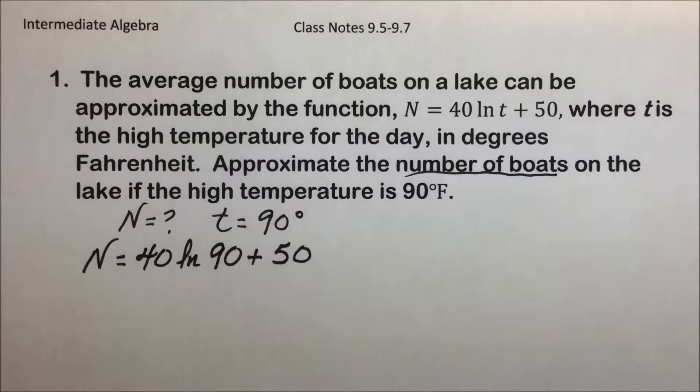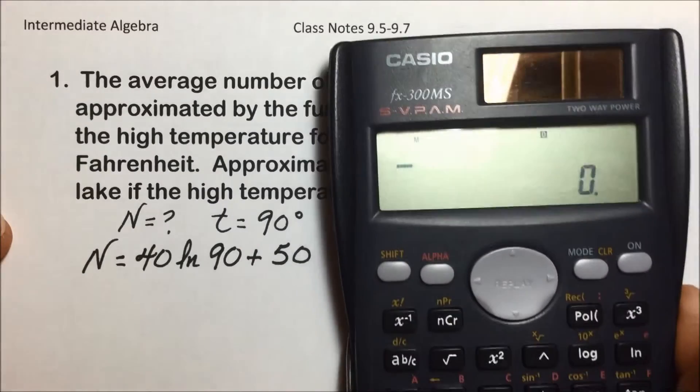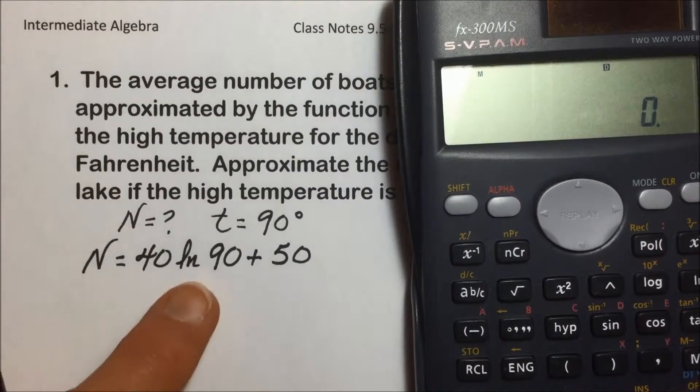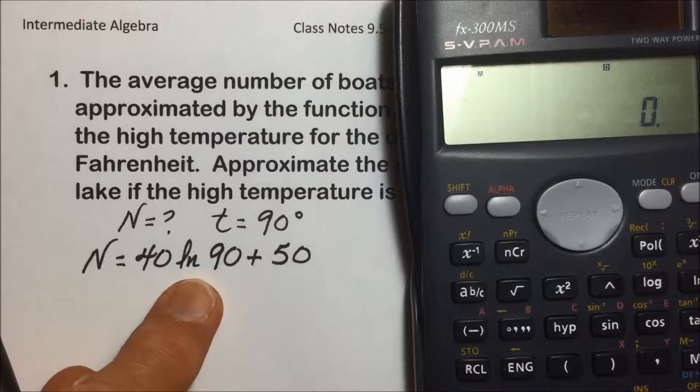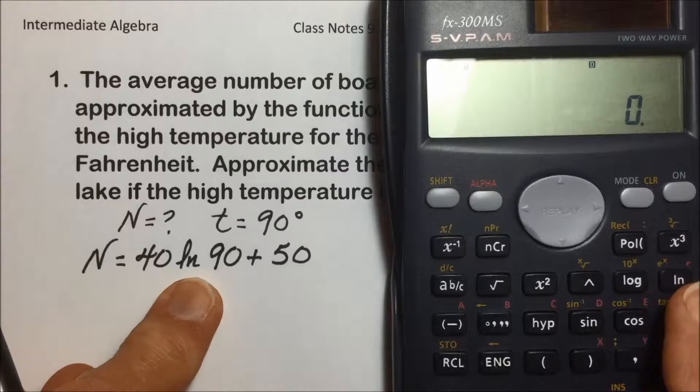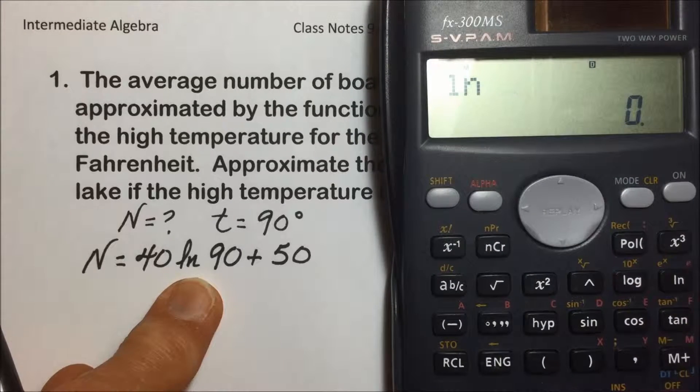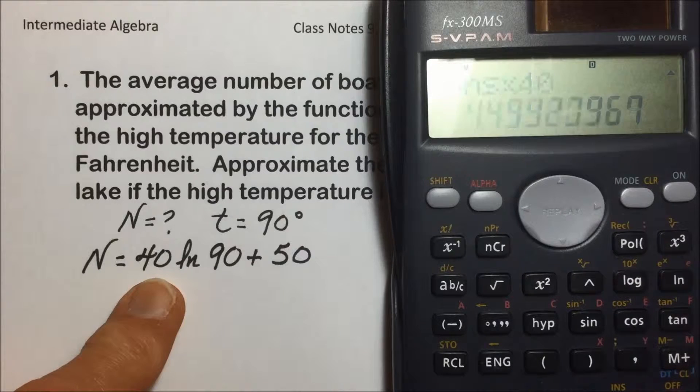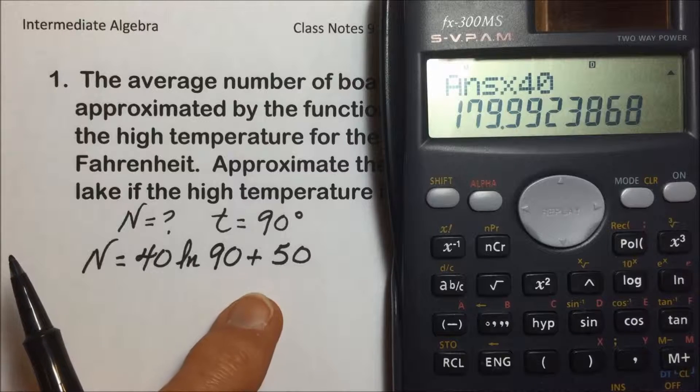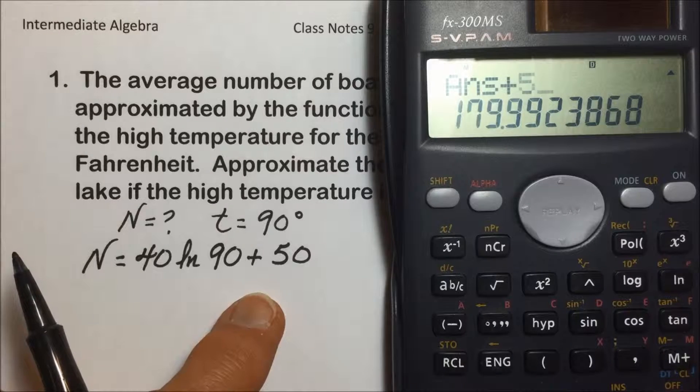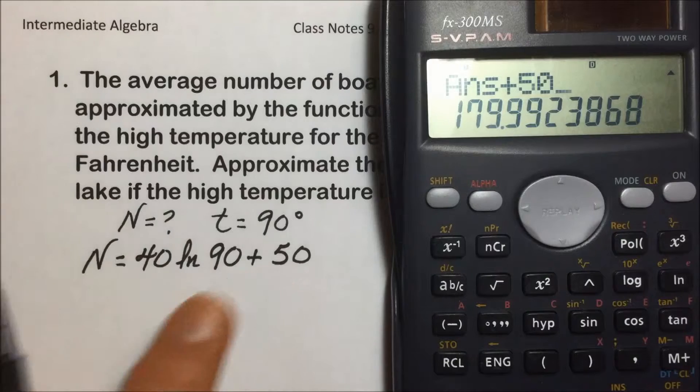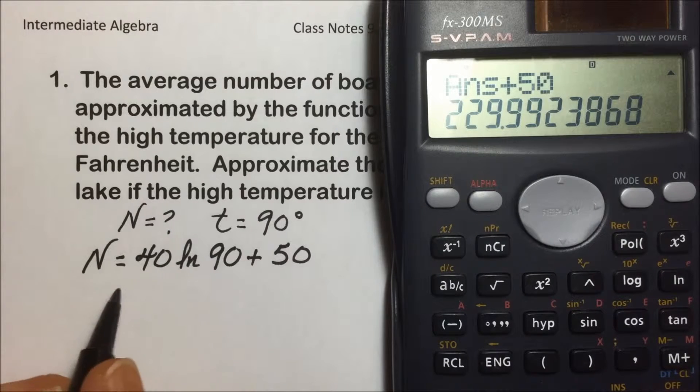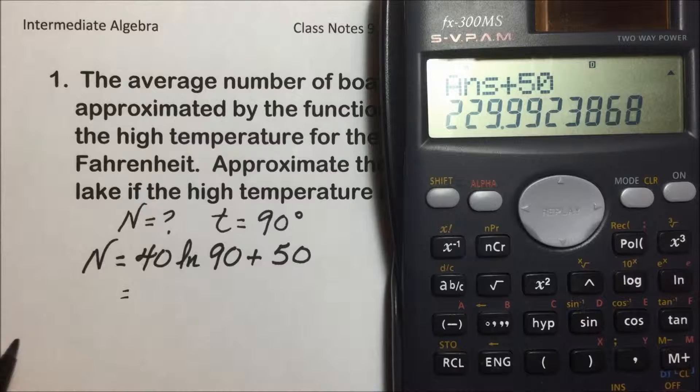Using a scientific calculator to simplify this, we're using natural log and following the order of operations. I will tap the natural log key of 90, multiply it by 40 next in our order of operations, and then after hitting equals, I will tap the plus 50 to do the last order of operation, any addition or subtraction.